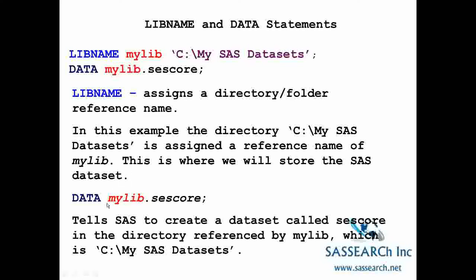The directory c:\my SAS data sets is assigned the reference name mylib, and this is where we will store the SAS data set. The statement data mylib.sesscore tells SAS to create a SAS data set called sesscore, stored in the directory referenced by mylib, which is the c:\my SAS data sets directory.